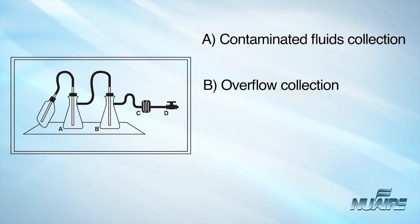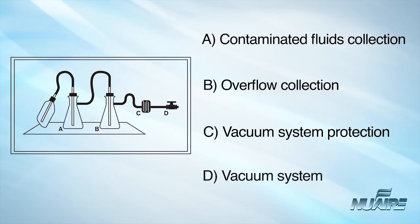A glass sparger in flask B minimizes splatter. An in-line HEPA filter, C, is used to protect the vacuum system, D, from aerosolized microorganisms or contaminated liquids.